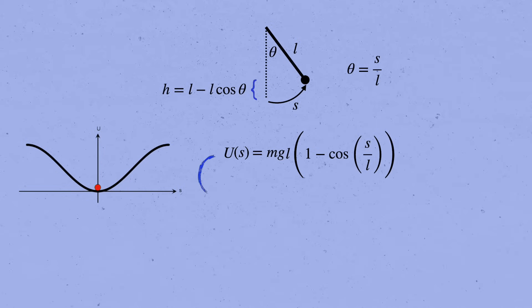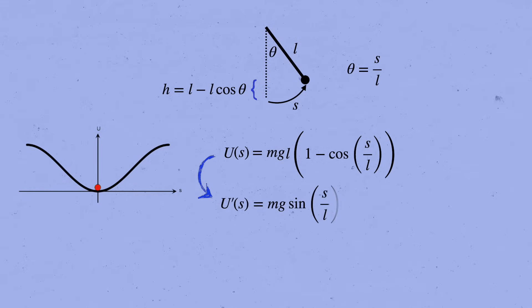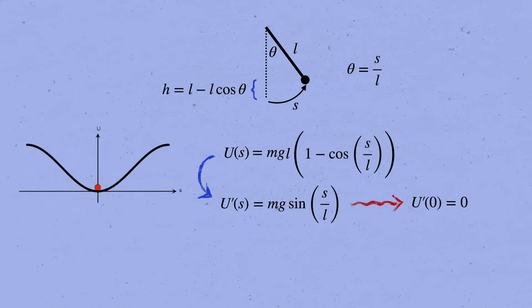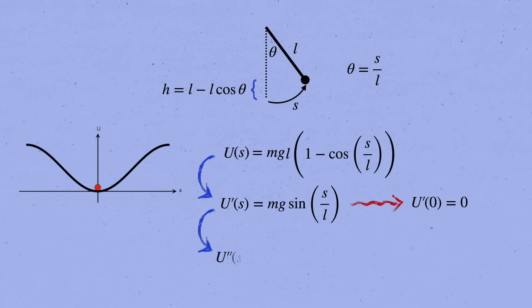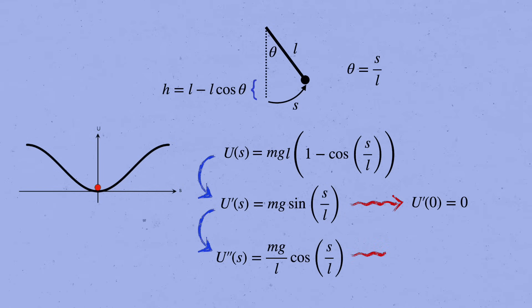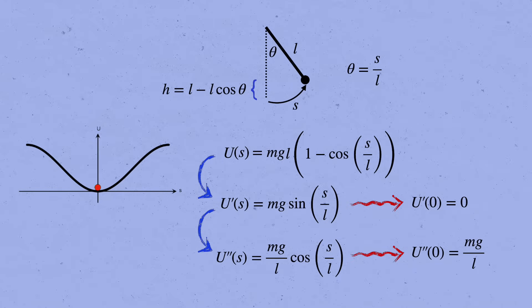And we can check by taking the derivative of the potential energy. The derivative of the cosine gives us minus sine, and then we get a 1 over l from the chain rule, making u prime of s equals mg times the sine of s over l. And if we plug in s equals zero, we indeed get sine of zero equals zero. The second derivative is meanwhile mg over l times cosine of s over l. If we plug in s equals zero there, we get u double prime of zero equals mg over l.